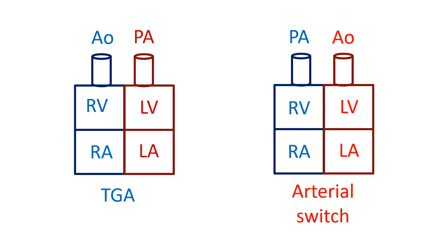While the arterial switch redirects the arteries arising from the ventricles — the lower chambers — the atrial switch reroutes the blood coming to the upper chambers. In transposition of great arteries, oxygen-poor blood returning from the body reaches the right atrium and gets pumped into the aorta from the right ventricle. In atrial switch, blood returning to the right atrium is redirected to the left ventricle.